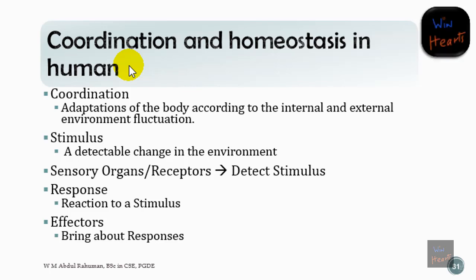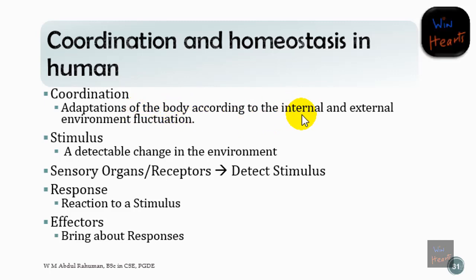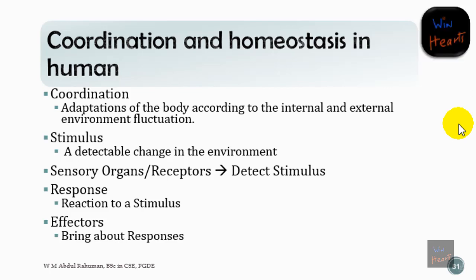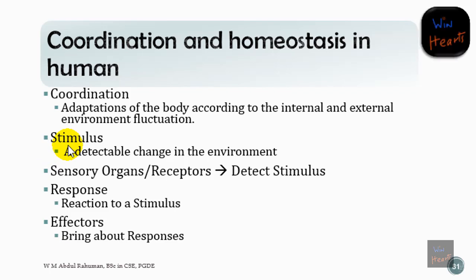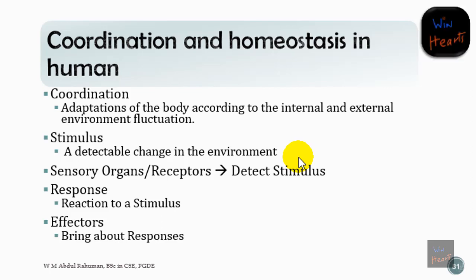When we speak about coordination, we mean the adaptations of the body according to internal and external environment fluctuations — how our body responds to changes inside the body, the internal environment, and outside the body, the external environment. This change comes according to a stimulus. A stimulus is a detectable change in the environment, and most of the time stimuli come from the external environment.